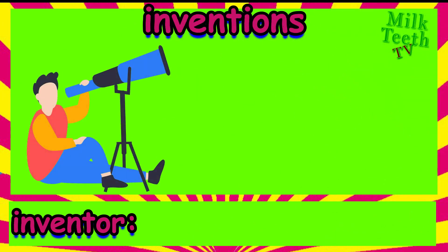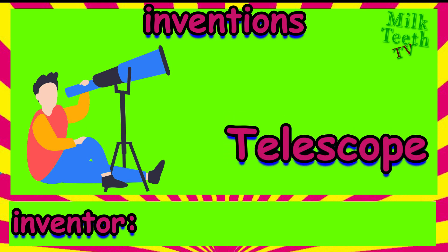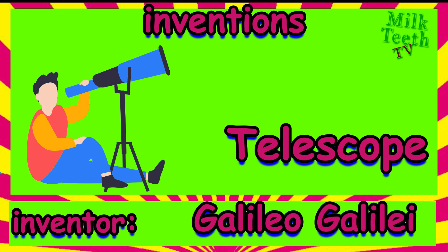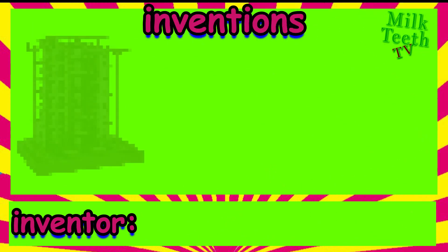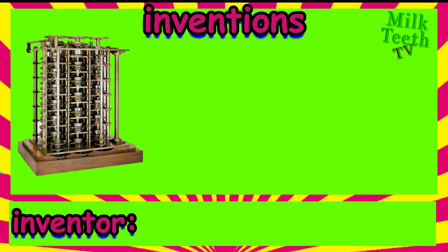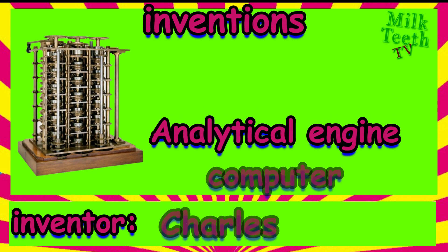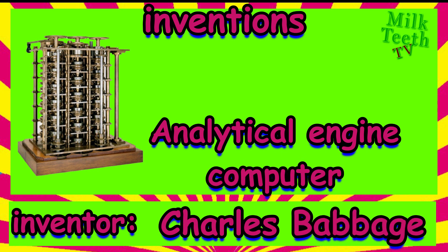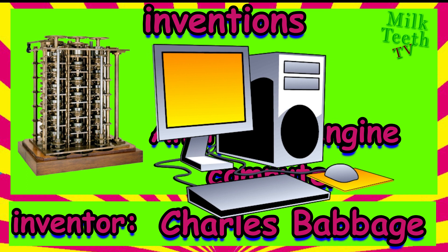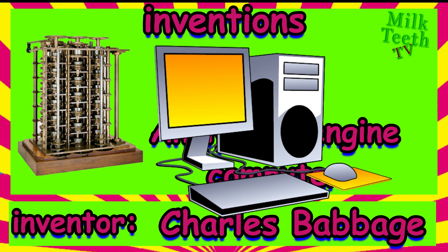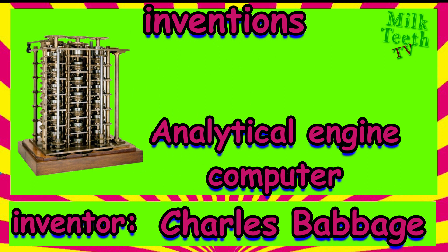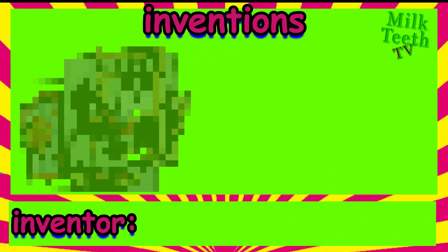Do you love gazing at the stars? The device used for it is called a telescope, and it was first invented by Galileo Galilei. This is an analytical engine — it was the first human computer, invented by Charles Babbage. It is one of the most remarkable inventions in the world and is the first ancestor of the present-day computers we use today.